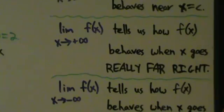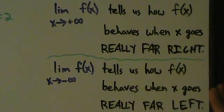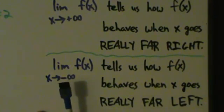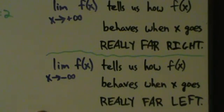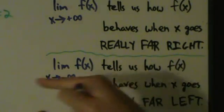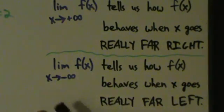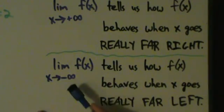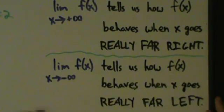We also have the limit as x approaches negative infinity, and that tells us how f of x behaves when x goes really far to the left. So if we take x and send it really far to the left towards negative infinity, this limit is going to tell us how the function f of x behaves and what it looks like it's going to do.